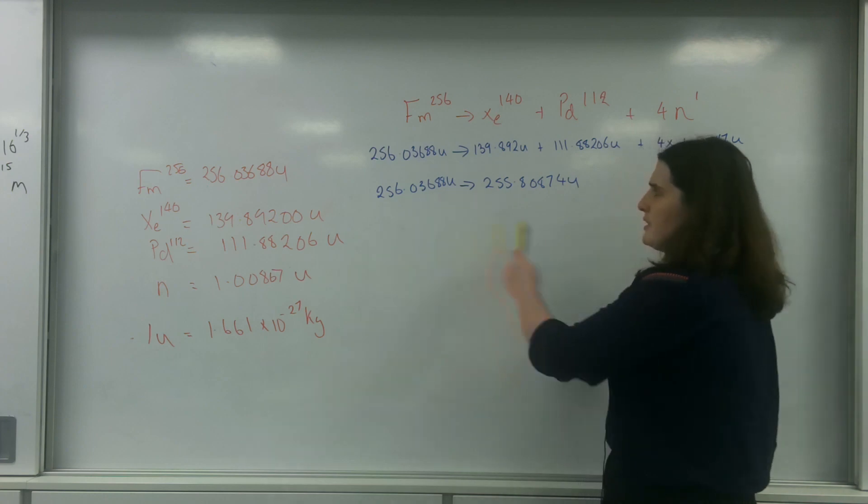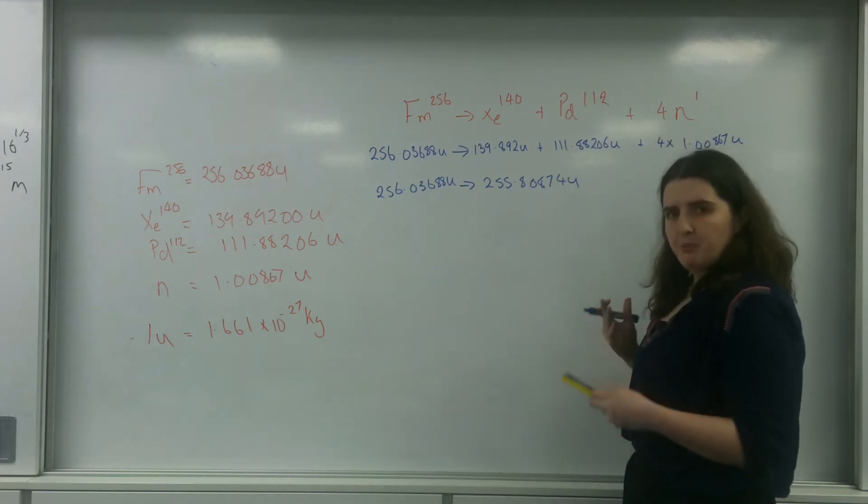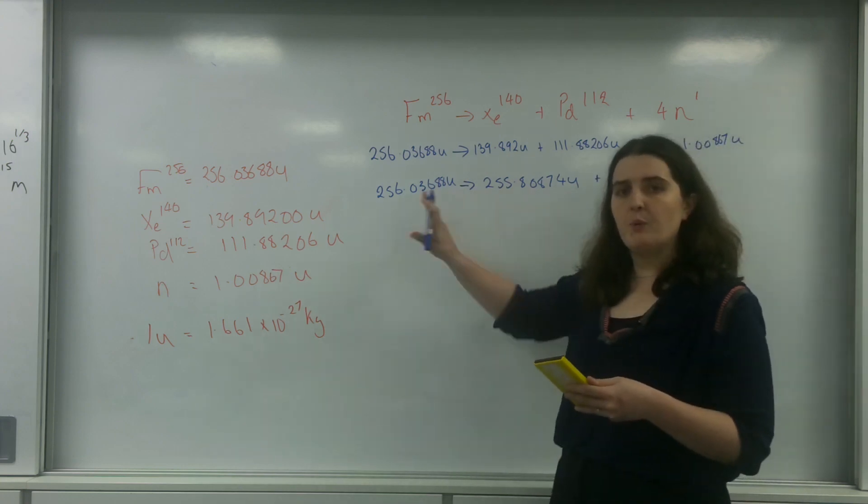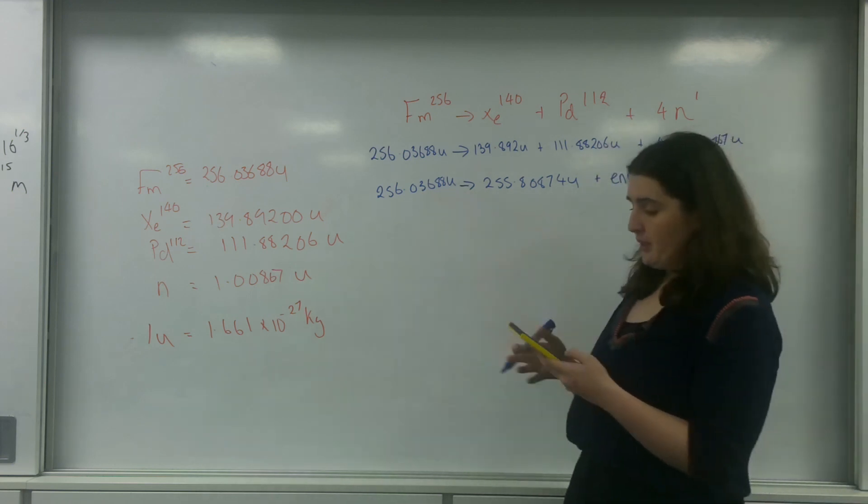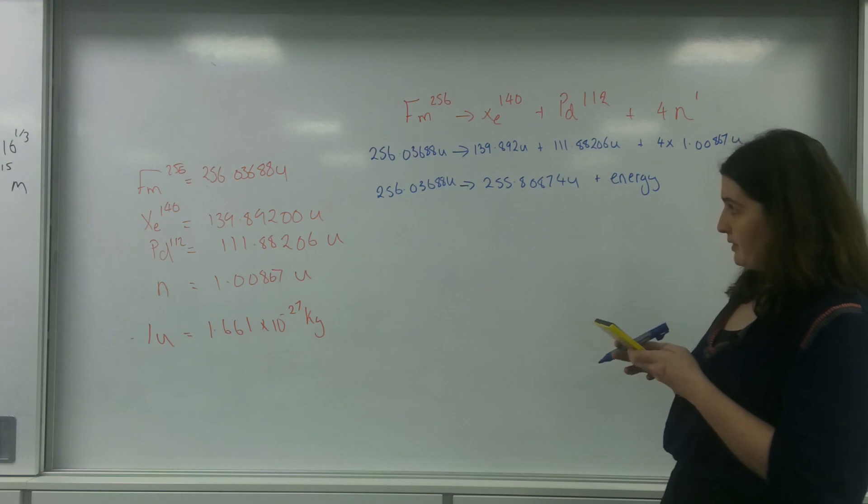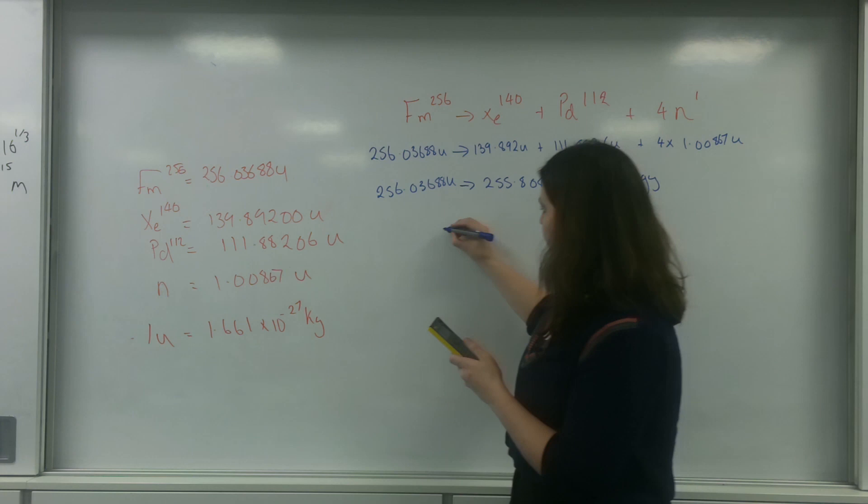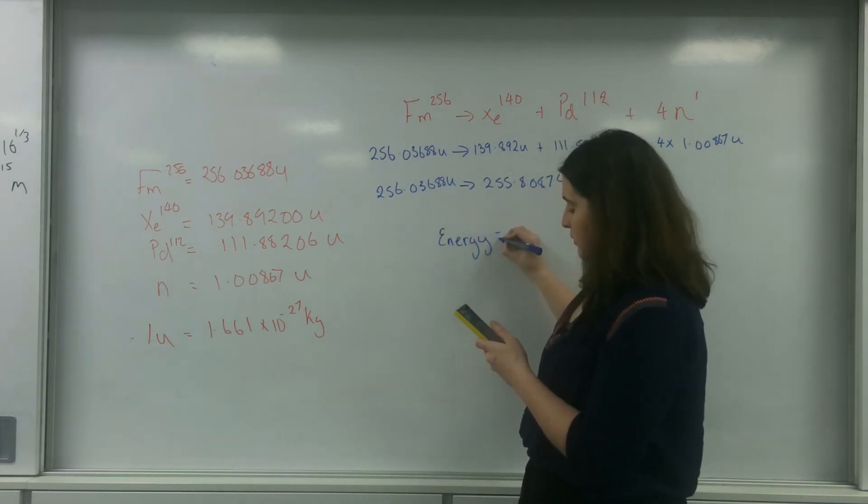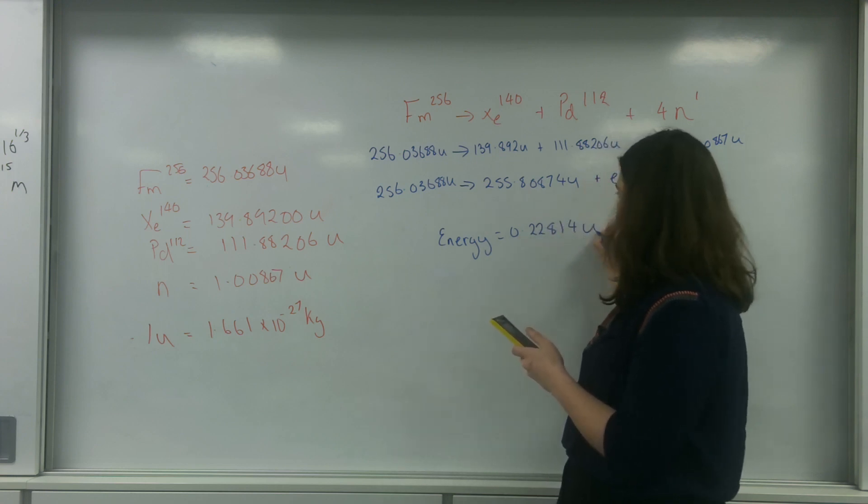And as you can see, there is a difference. But things must be conserved, which means that in this reaction here, energy must be released, and that energy is equal to the mass deficit. So the difference between these two, 256.03688 minus that, is going to be energy equals 0.22814 U.